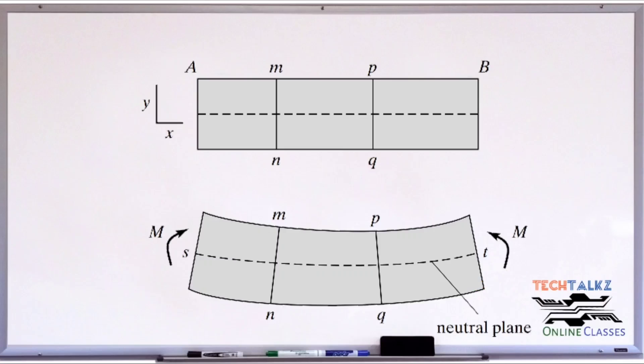The upper side is shortened, it is compressed. The lower part of the beam is in tension. The upper part is in compression.